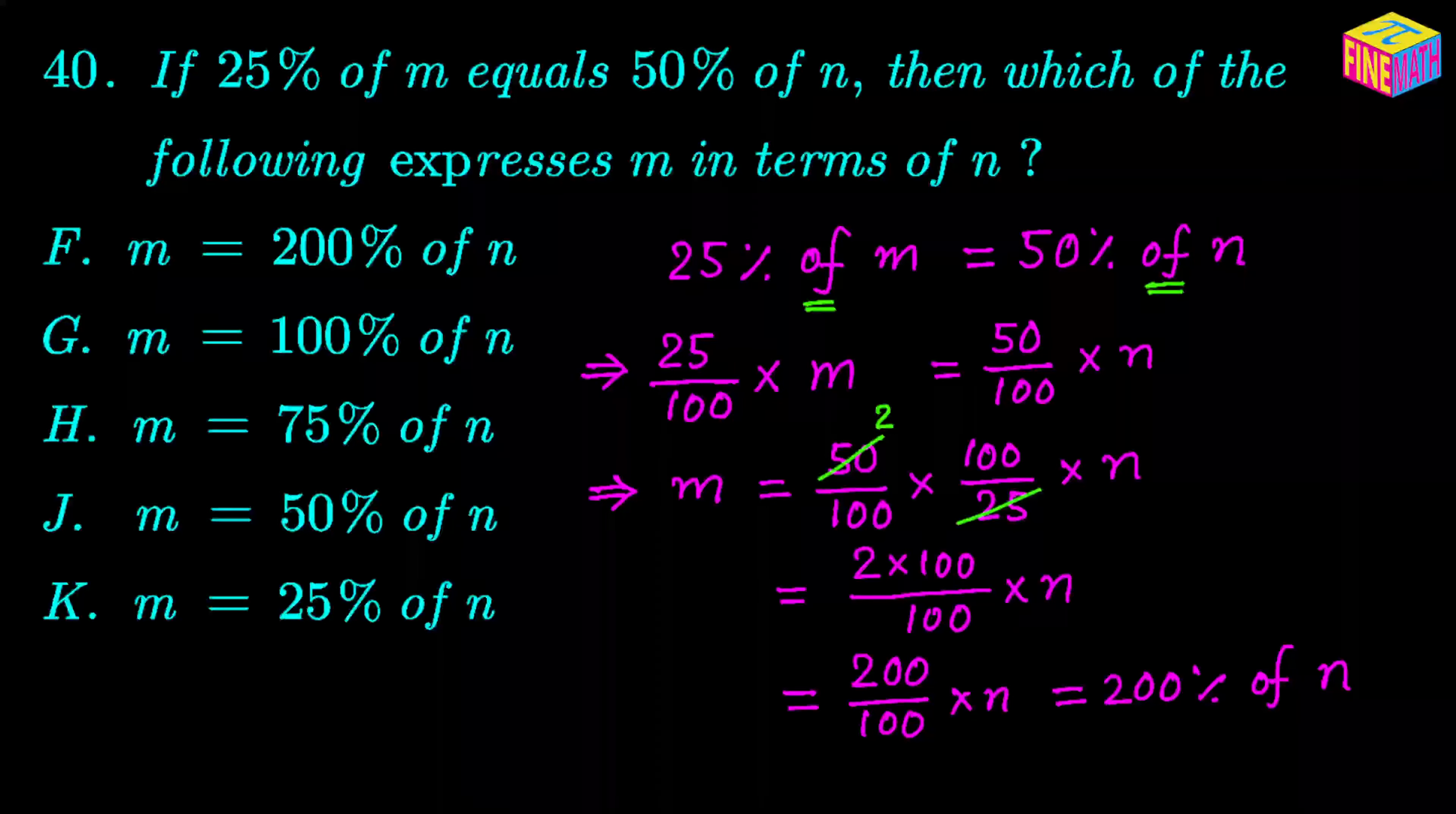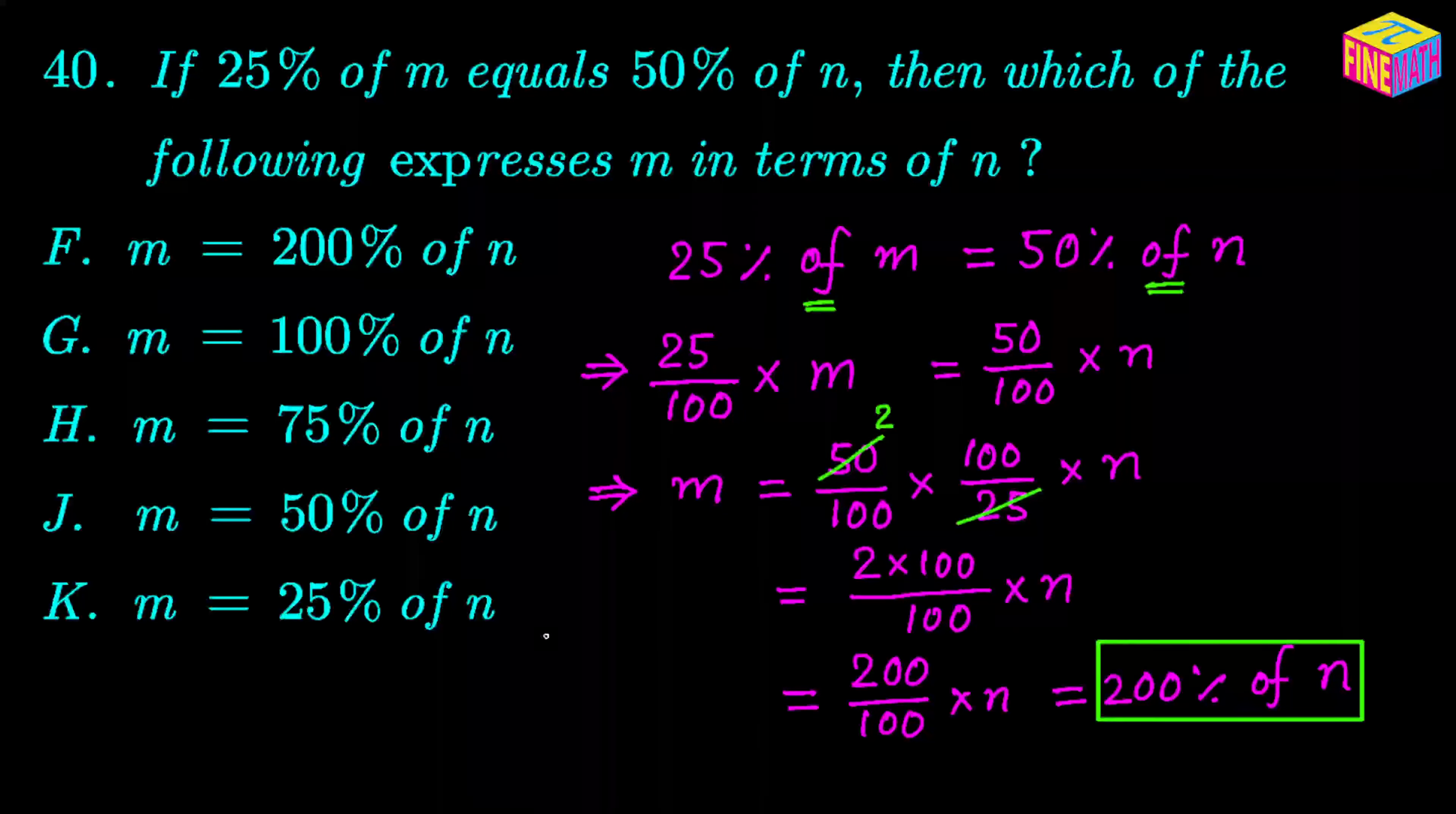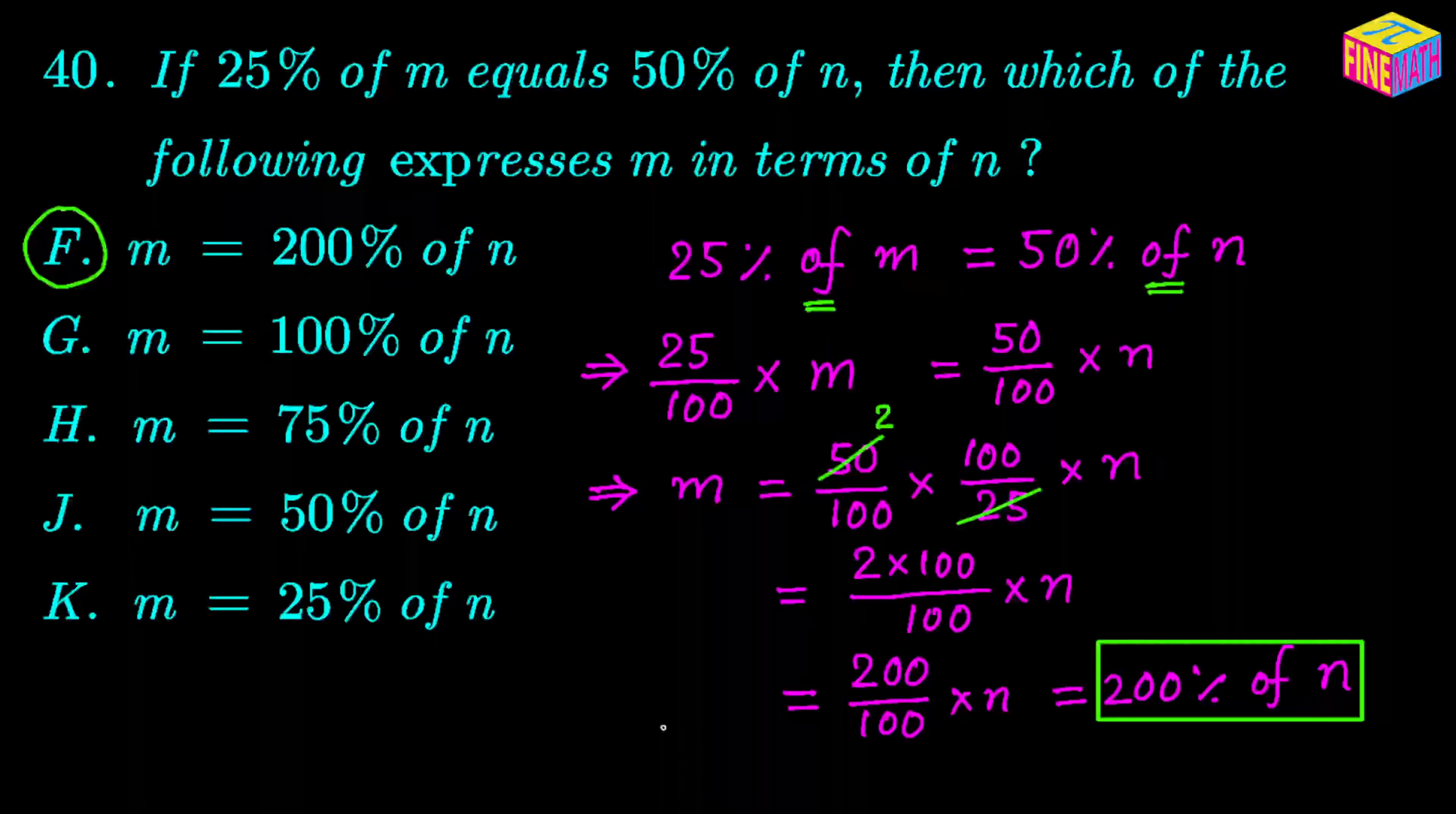So our answer is m equals 200 percent of n. So then what is the correct answer option here? Well, we have m equals 200 percent of n under option F, so F is the correct answer. I hope everything made sense. Thank you for watching. See you in the next video.